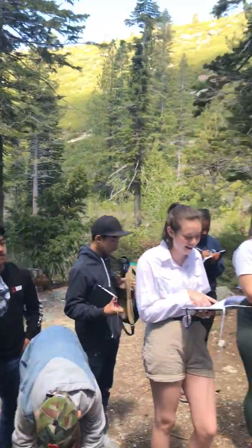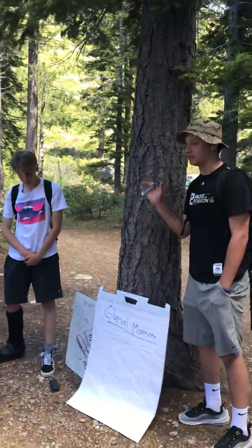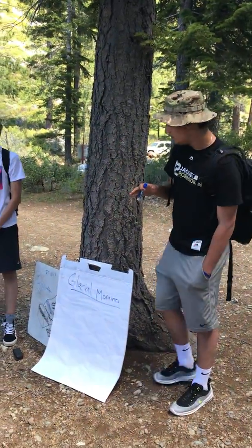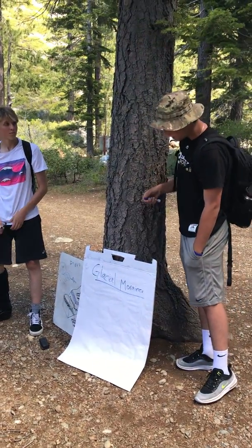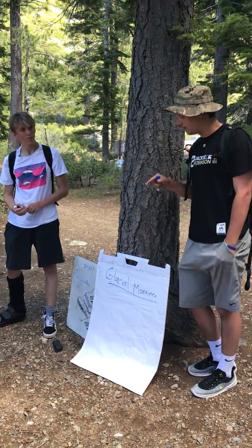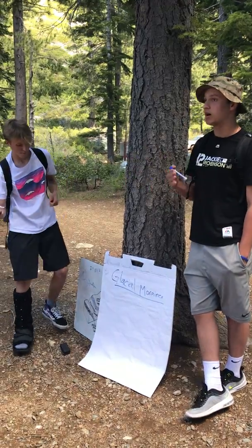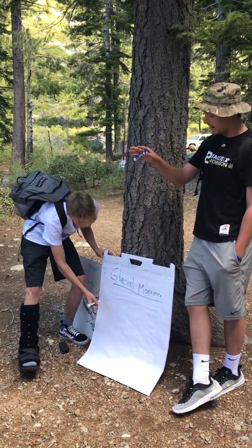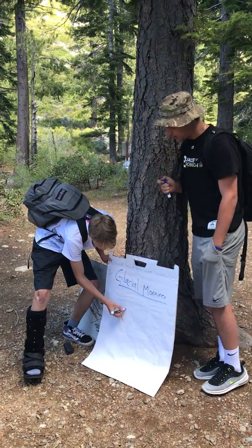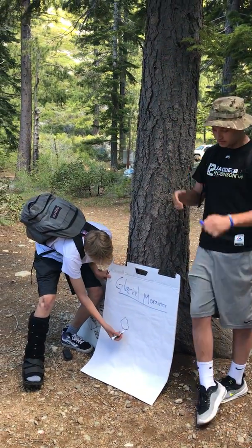So what we're going to be focusing on is what happens when a glacier actually slides down and moves because of gravity. As that glacier slides down, it scrapes up debris and rocks as it makes its way down. And that debris and rocks get pushed out in front of the glacier.